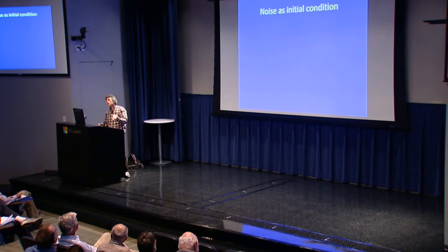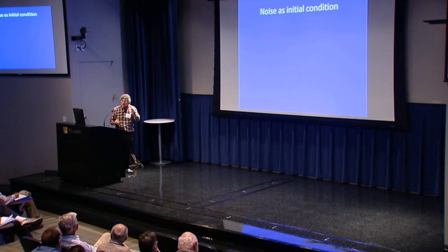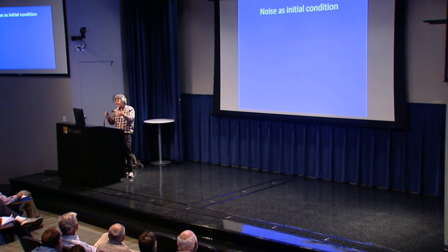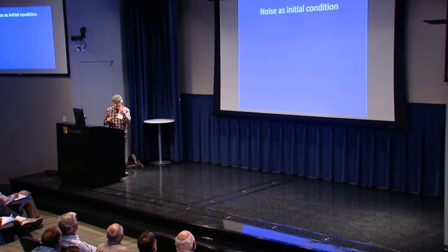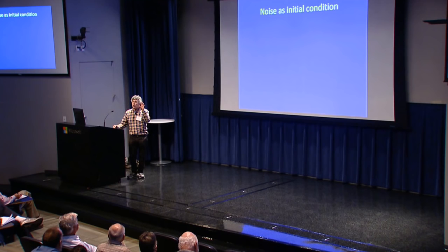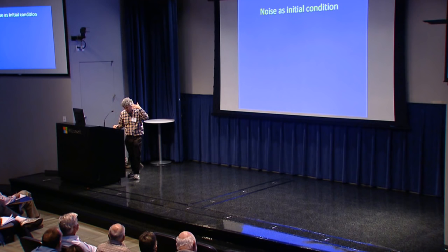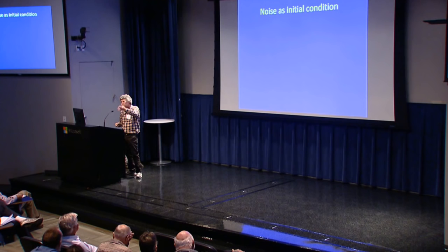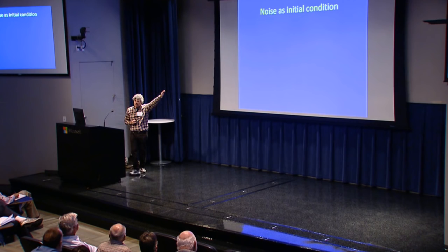They also raised concerns about our numerical methods. We reproduced all results using standard off-the-shelf astrophysical codes. One concern — which was also our own — was that we started with a vortex, whereas others argued you should start with noise, since a collapsing gas cloud that forms a disk leaves behind only noise. So we asked: could we reproduce this starting with noise instead?